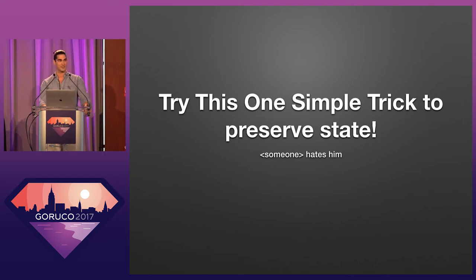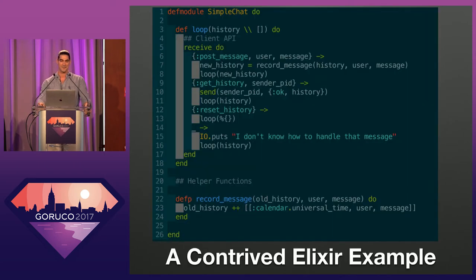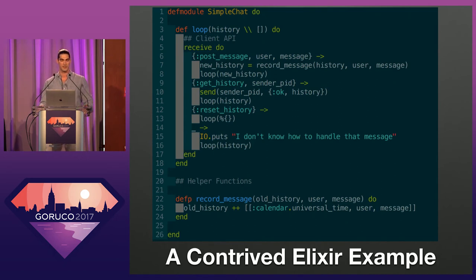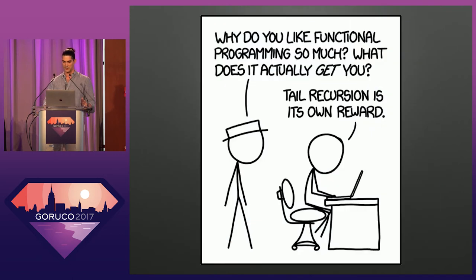A problem for object-oriented programmers in a functional world is: how do you preserve your state? And this one simple trick is how you do that. The receive block looks a lot like the method_missing we had — there are three separate cases that handle processing and response. It's all wrapped in a loop that passes state, so each call — post message, get history, reset — invokes loop again recursively, passing in either the modified history. In Ruby, this would cause a stack overflow, but it's a completely valid approach in Elixir because of the magic of tail recursion.